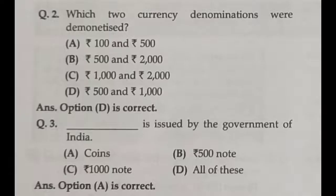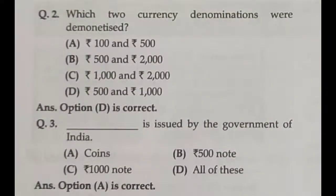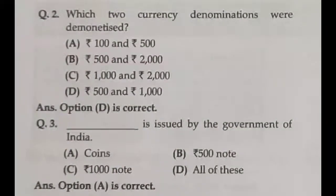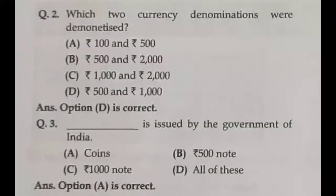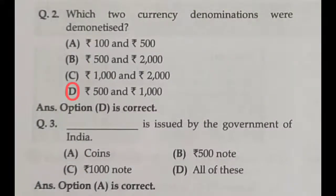Question two: which two currency denominations were demonetized? We know it was Rs. 500 and Rs. 1000. Options like Rs. 500 and Rs. 2000 are not correct. Answer D — Rs. 500 and Rs. 1000 — is the correct answer.